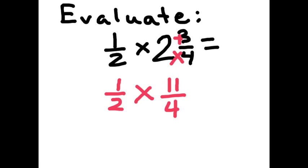Now we just multiply this fraction like normal. 1 times 11 is 11, 2 times 4 is 8.